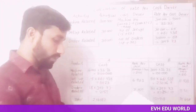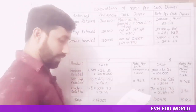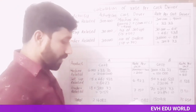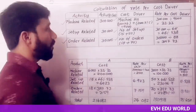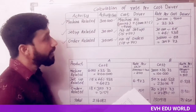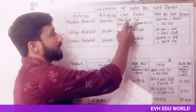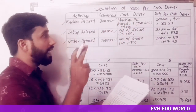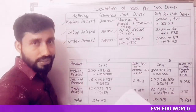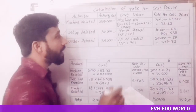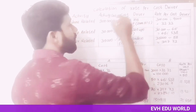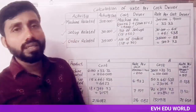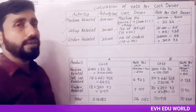Machine-related activity cost is Rs. 3,00,000. The cost driver total machine hours: A contributes 1,000 × 6 = 6,000 hours and B contributes 2,000 × 1.5 = 3,000 hours, totalling 9,000 hours. The rate per cost driver is Rs. 3,00,000 ÷ 9,000 = Rs. 33.33 per machine hour.